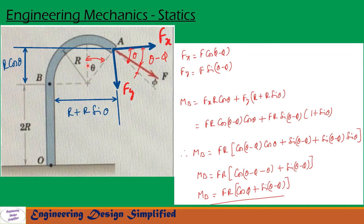Since this angle is theta and this radius is r, the distance from this point to point B can be written as r·cos(θ). This is r, this is r, and this is theta, so the distance from here to here will be r·cos(θ). Similarly, the vertical distance from here to here is r·sin(θ), so the total distance becomes r plus r·sin(θ).